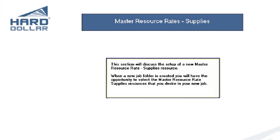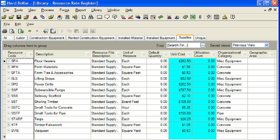This section will demonstrate how to create a supplies master resource in the library. When new job folders are created, you will have the ability to specify the master resource rates that you want to have copied into the new job. The master resource rate register supplies form is used to create or modify the rate charged for the employment of an individual construction supply resource of a certain class. Supplies rates are used to separate expendable supply resource costs from permanent material resource costs in the job's cost breakdown structure. Each supplies resource can be assigned two different tax rates and a minority participation allowance.